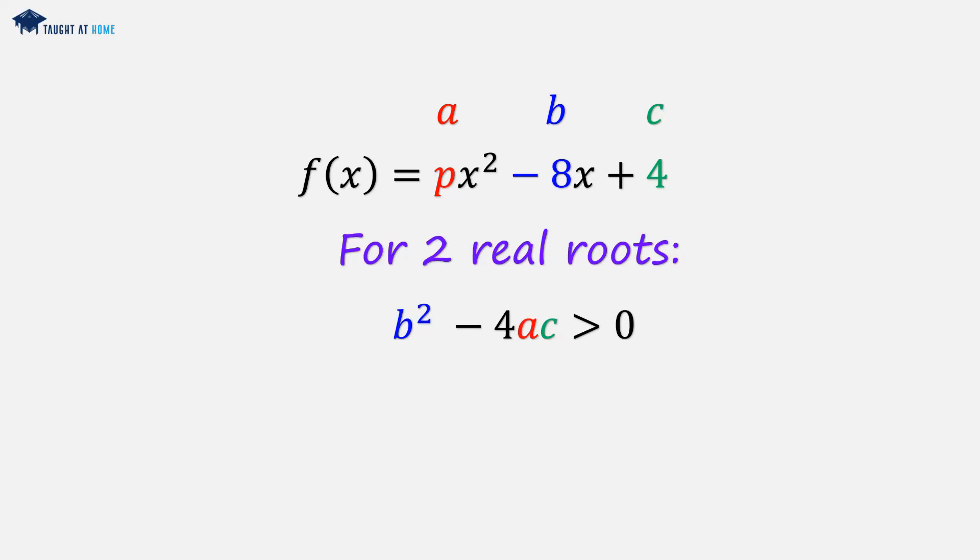We'll substitute our b, a, and c values in. We've got (-8)² - 4 × p × 4, and we can tidy this up. So (-8)² is 64, and 4 × 4 is 16, so 64 - 16p has to be greater than 0.